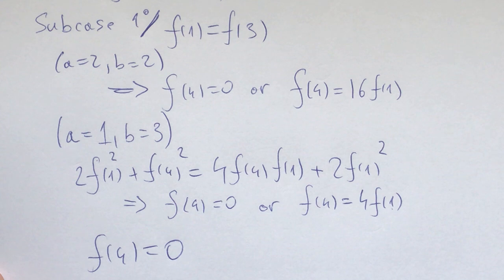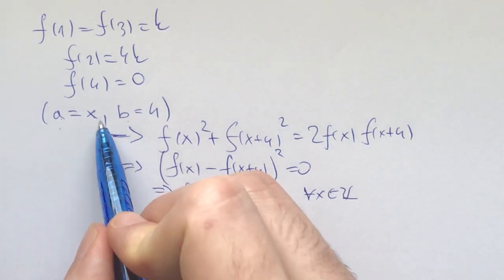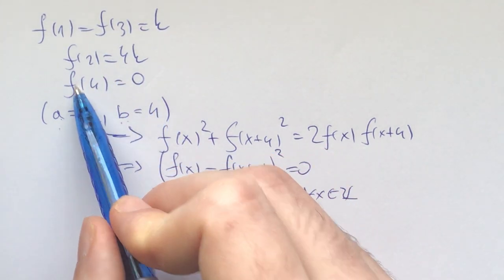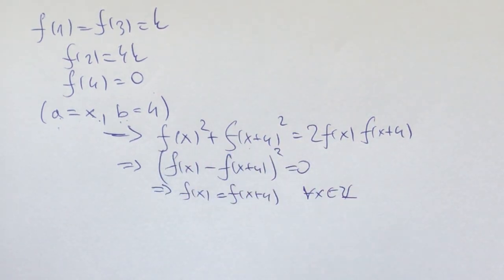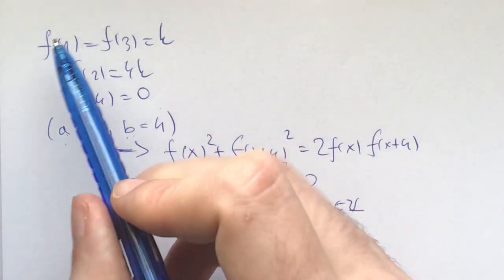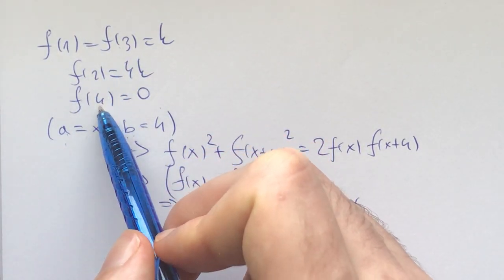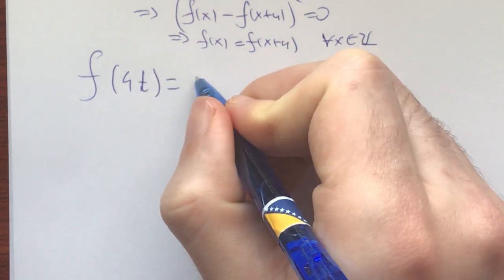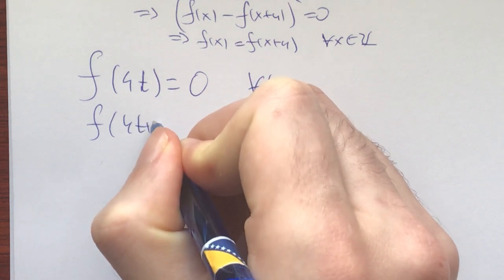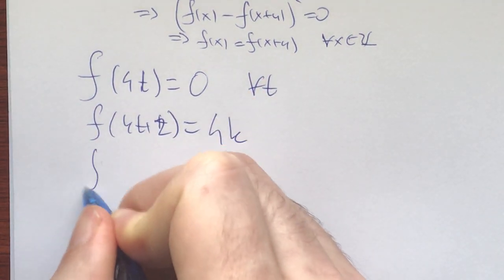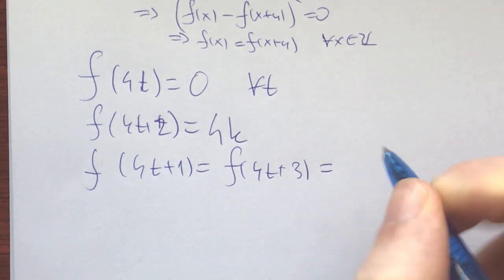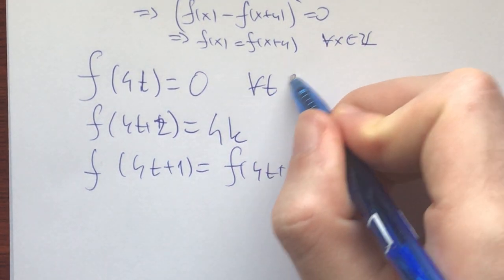Take 3 minutes and try to solve this case. Plugging in a = x and b = 4, we get f(x) = f(x+4) because f(4) = 0 cancels everything except f(x) and f(x+4). Given that f(1), f(2), f(3), f(4) are defined, our function looks like: f(4t) = 0, f(4t+2) = 4k, and f(4t+1) = f(4t+3) = k for all integers t.